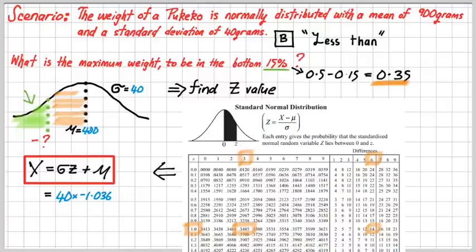In general, if we are below the mean and we are looking at our z values, they are going to be negative. Add the mean of 900 that we have in our distribution, and we get an answer of 858.56 grams.